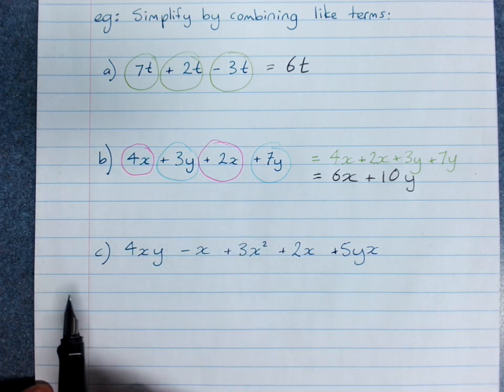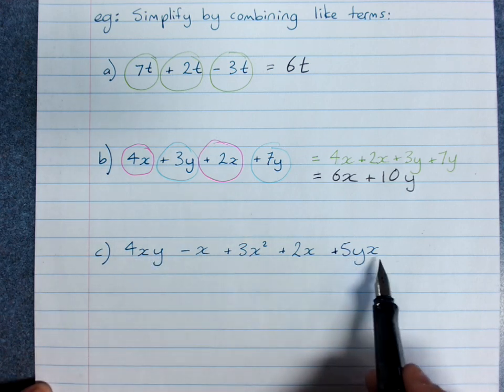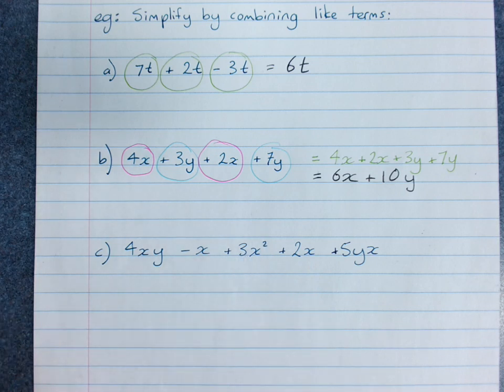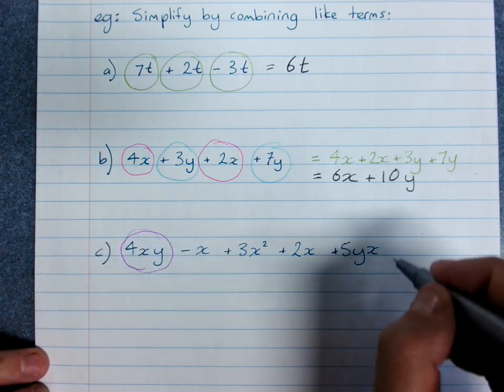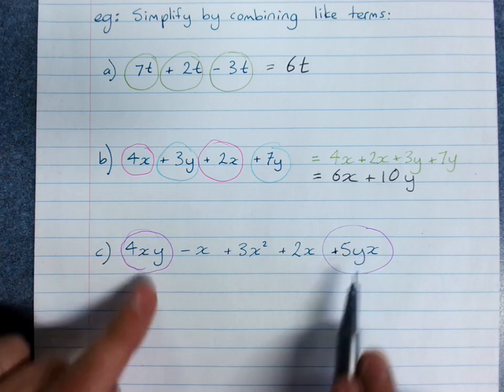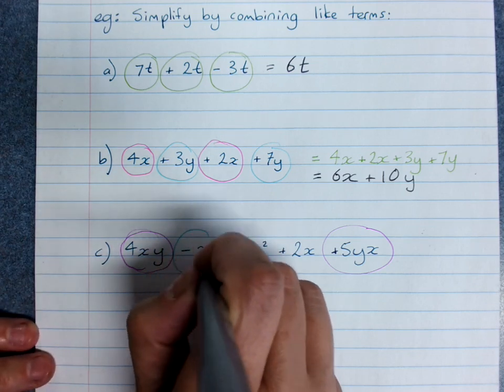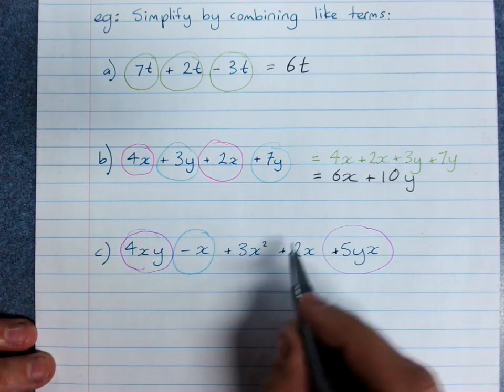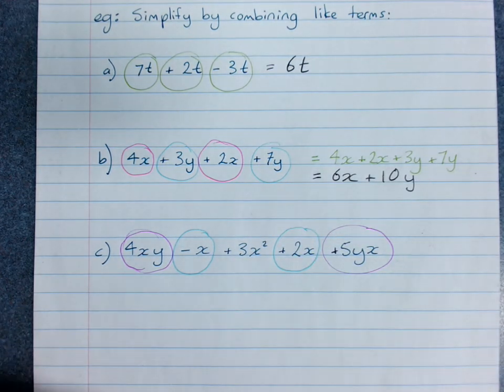Now this one is getting more complicated to find our like terms, because I've got xy and yx and x and x squared. So you look for the pairs of like terms. 4xy does go with 5yx - same pronumerals, order doesn't matter. Don't forget to keep the minus with the x. And that goes with plus 2x. And plus 3x squared is on its own - it doesn't have any like terms.